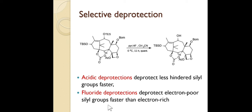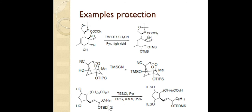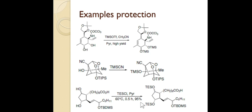Here are examples of silyl protection: two OH groups are protected using silyl triflate TMS-OTf, converting OH to OTMS. Similarly, OH is converted to OTMS in the presence of TMS-CN. Also, two OH groups are converted to OTES in the presence of TES-Cl (triethylsilyl chloride) with pyridine.